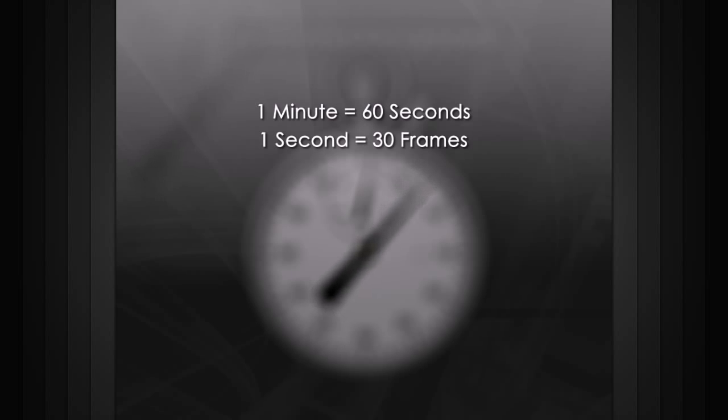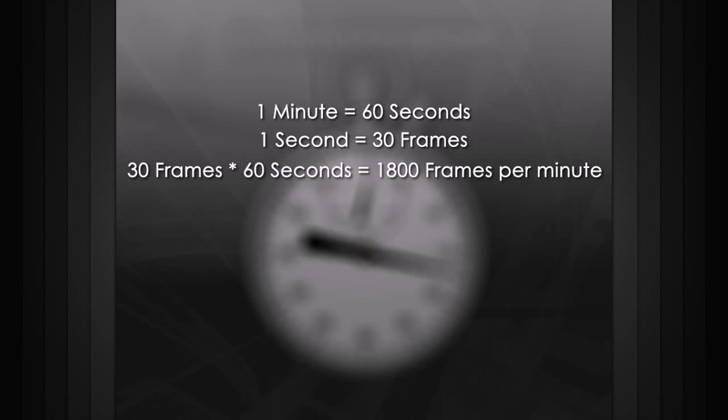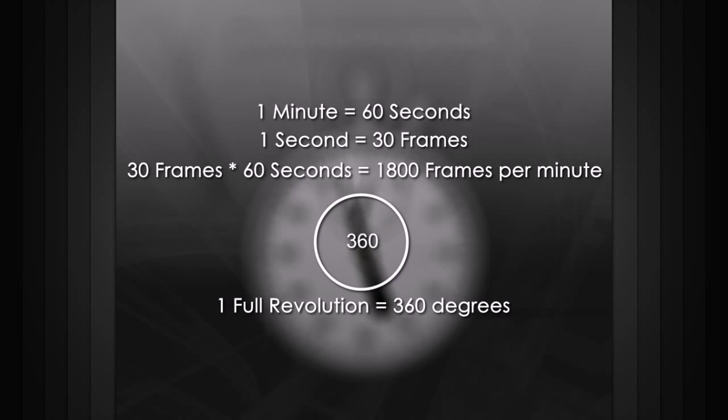One minute is 60 seconds, and each second has 30 frames. So, we want to complete a revolution once every 1,800 frames. One full revolution is 360 degrees, and we want it to rotate that distance over 1,800 frames. So, we divide 1,800 by 360, and we get 5.